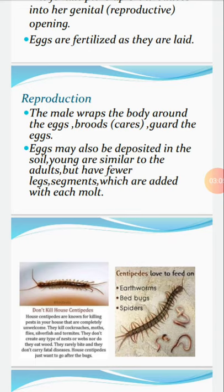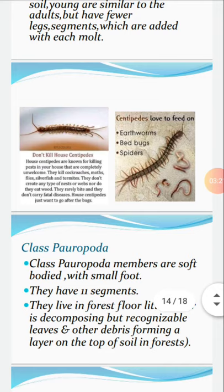Eggs may also be deposited into the soil. Young are similar to adults but have fewer leg segments, which are added with each molt. Images of centipedes show them feeding on earthworms and spiders.